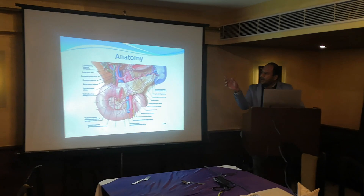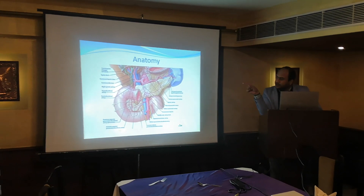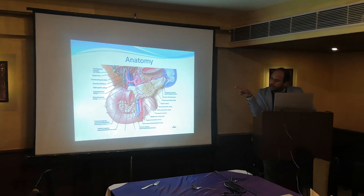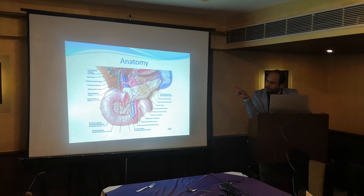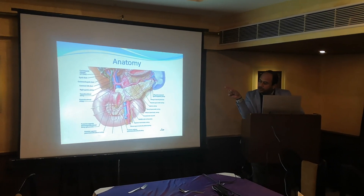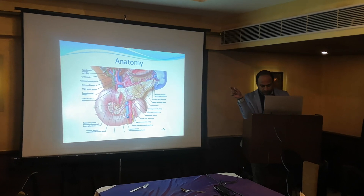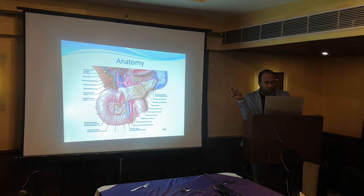So you see the anatomy of the pancreas — the yellow looking structure is the pancreas. It is in the retroperitoneum; it is a sausage-shaped structure.